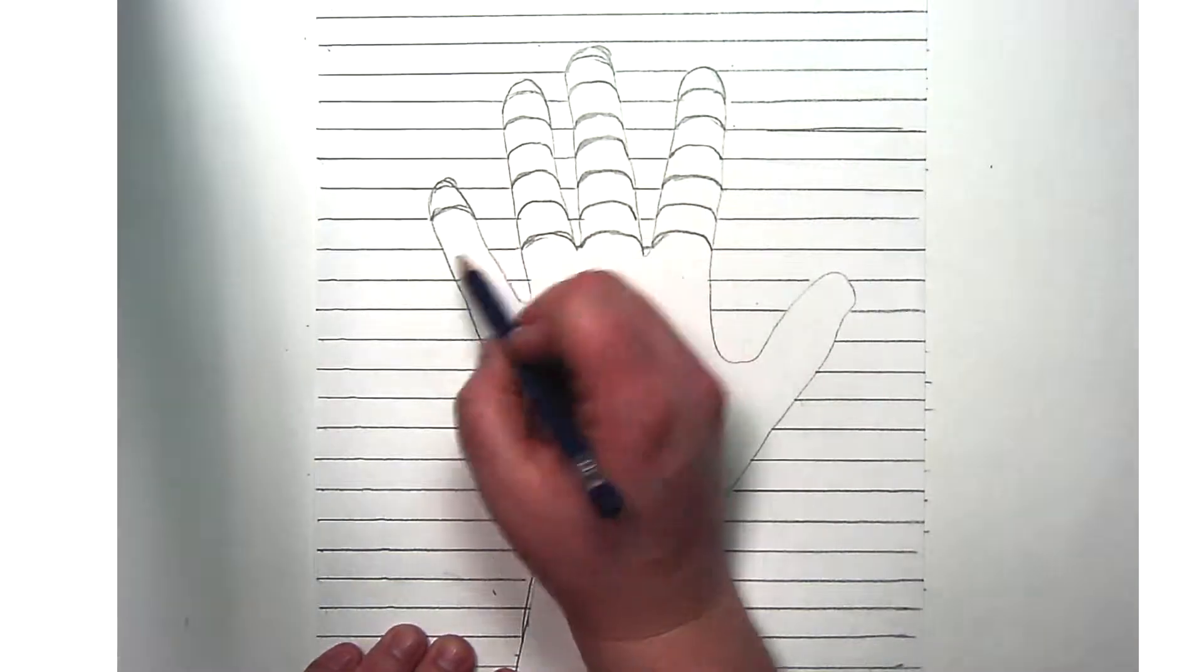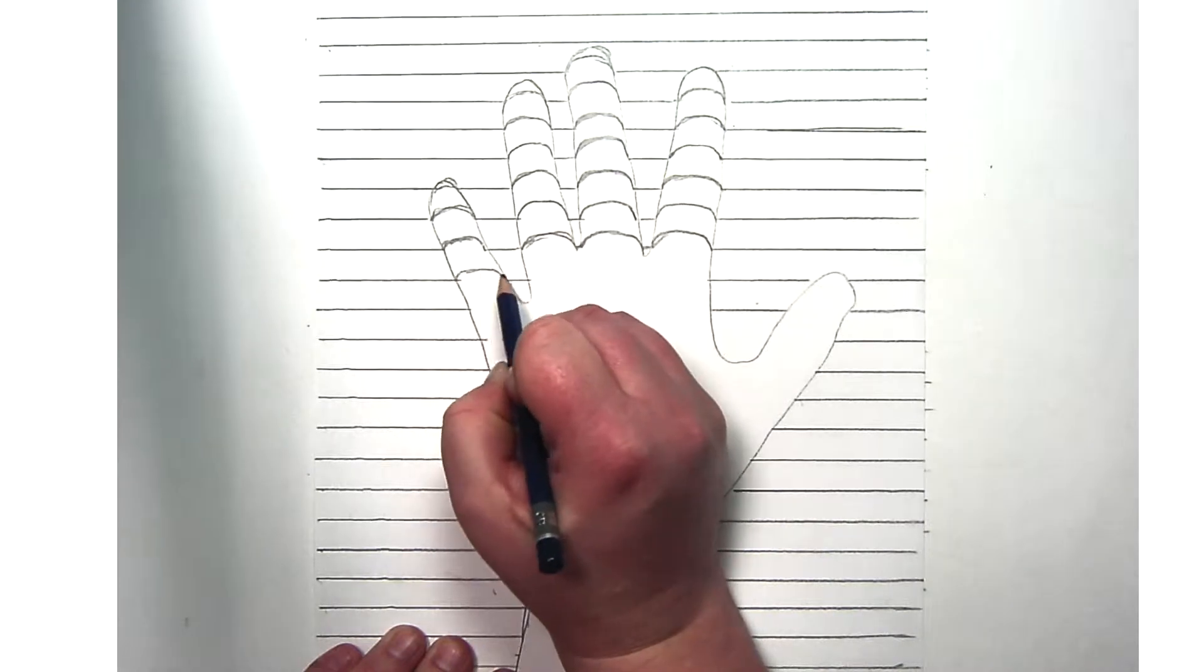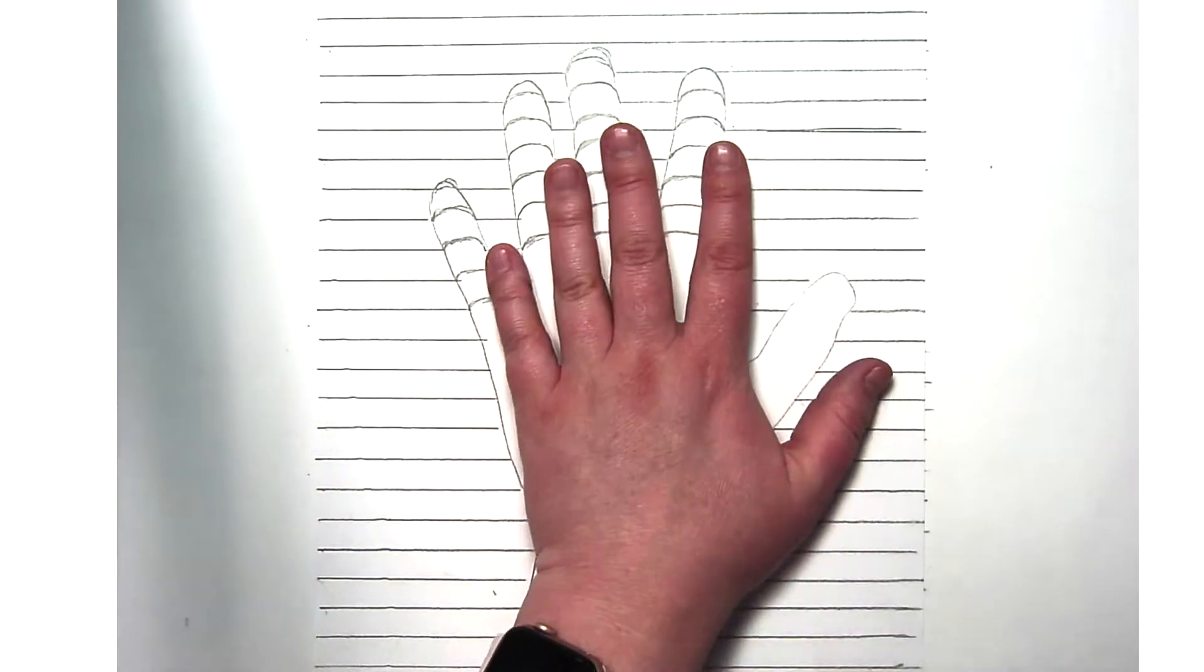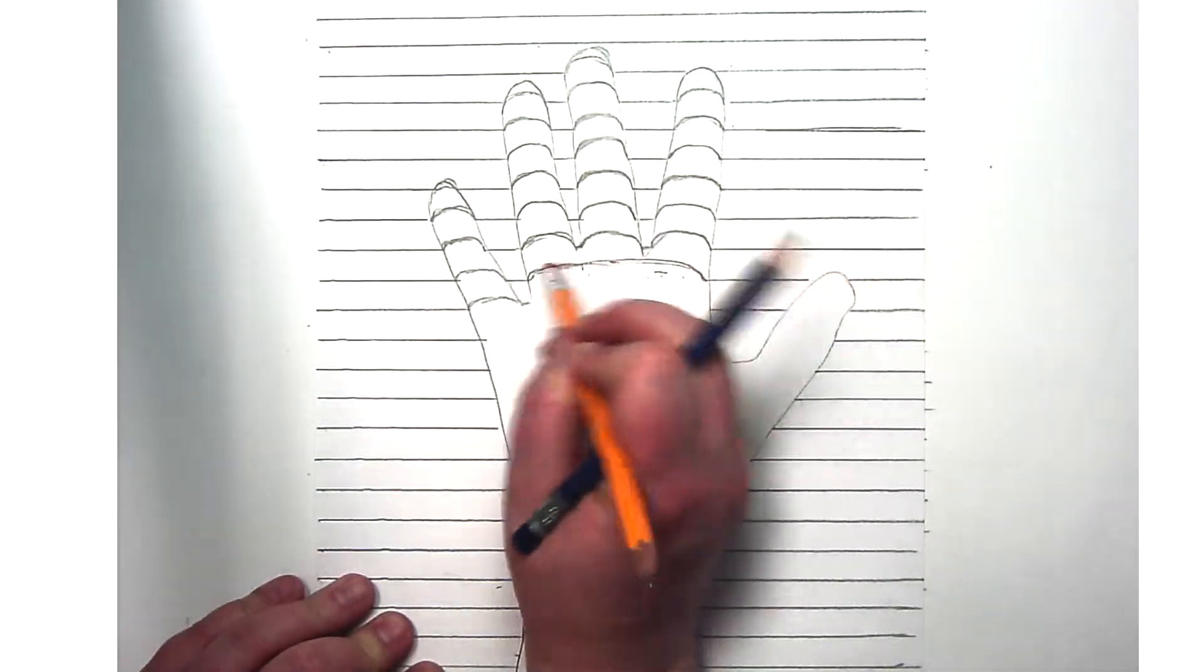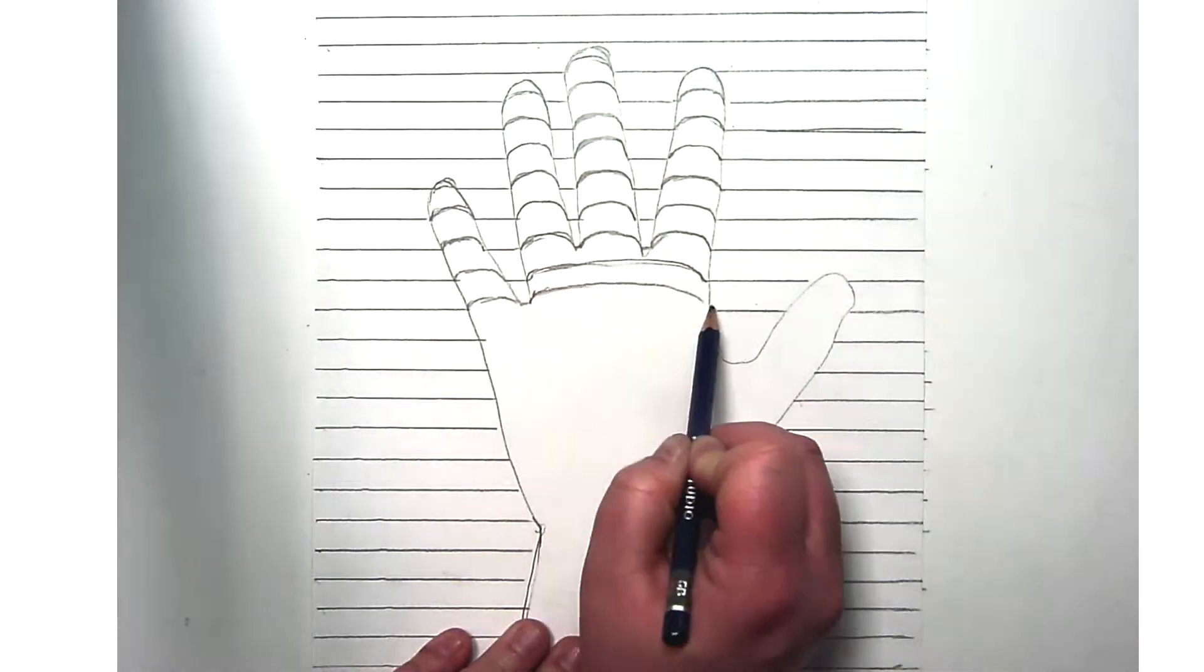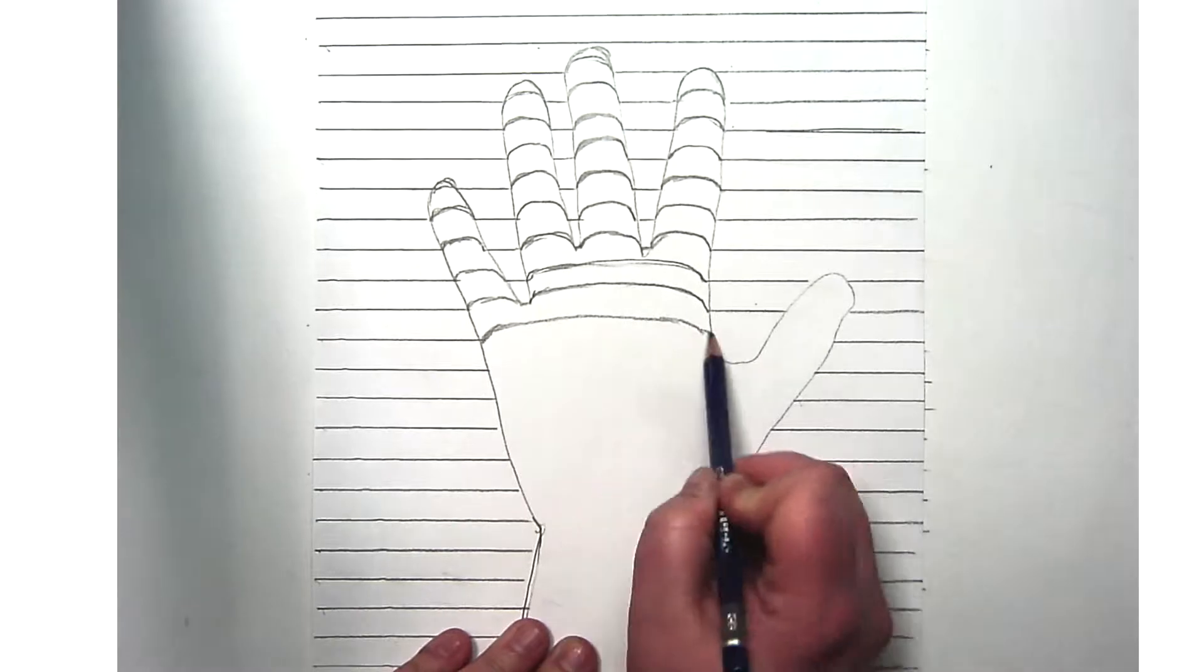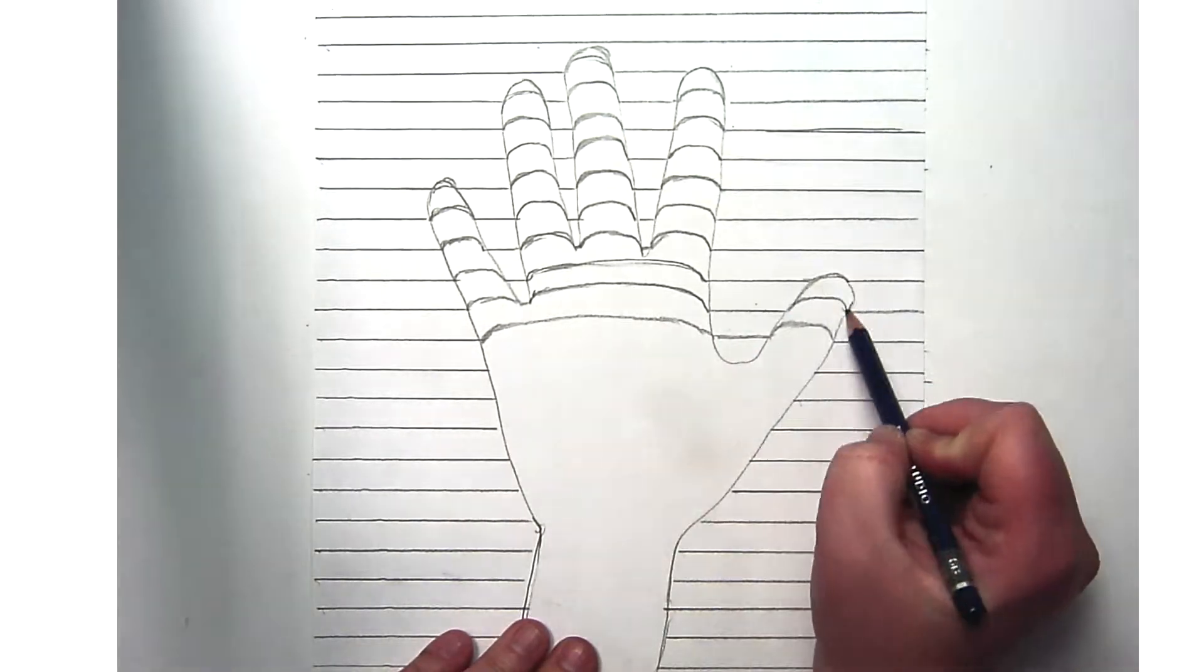And the lines aren't perfectly even curves like the top of a circle. They're actually kind of flat at the top, so it starts to curve up quickly, and then it flattens out and then curves back down again. So that's especially true in the palm.